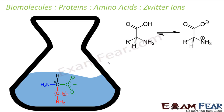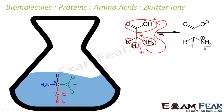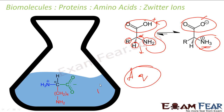An important concept is the zwitter ion. When an amino acid is placed in aqueous medium, the carboxyl group, being acidic, loses H+ and becomes COO−, while the NH2 group accepts H+ to become NH3+. This zwitter ion is overall neutral because it has both positive and negative charges. In this zwitter ionic form, the amino acid shows amphoteric behavior — acting as both acid and base. This happens only in aqueous medium.